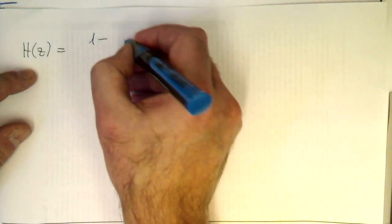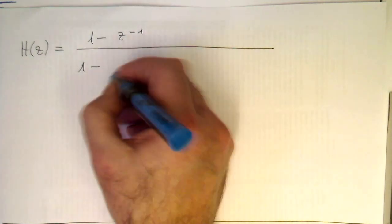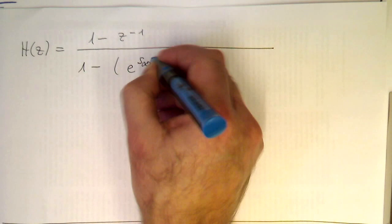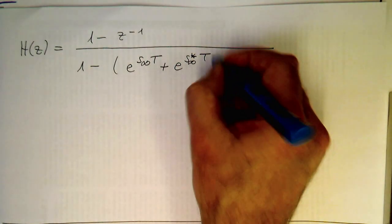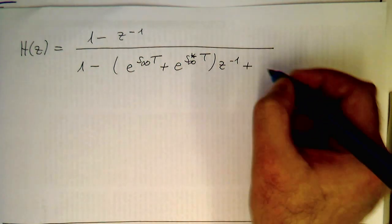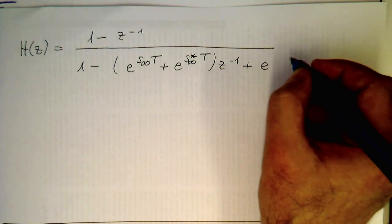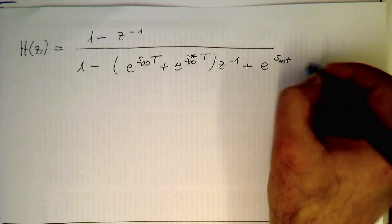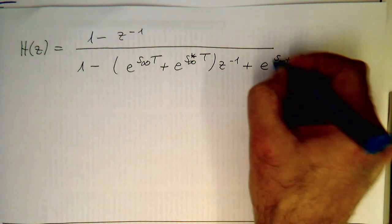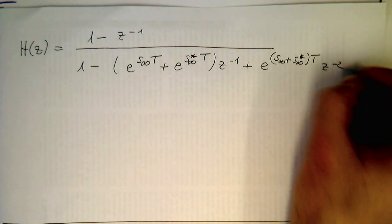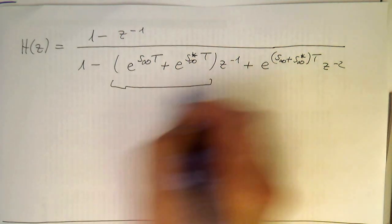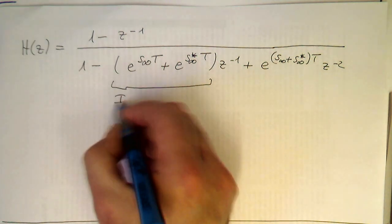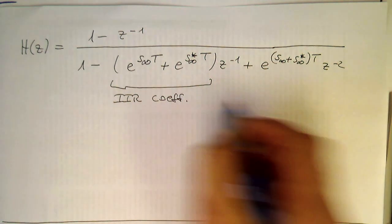So H(Z): the numerator is one minus Z^(−1). The denominator is one minus [e^(S_∞ · T) + e^(S_∞* · T)] · Z^(−1), plus e^((S_∞ + S_∞*) · T) · Z^(−2). The nice thing is that this IIR coefficient is real.